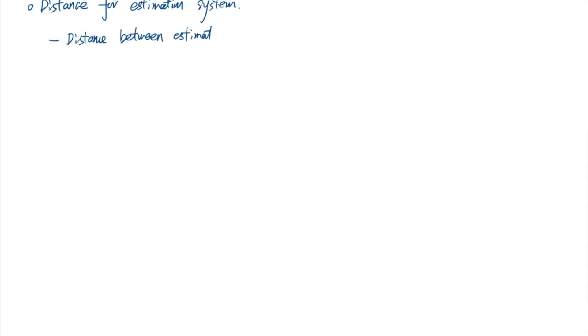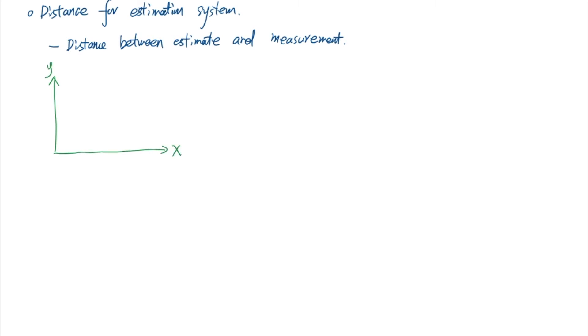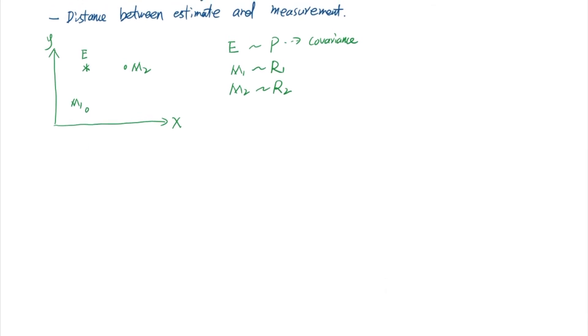Let's look at an example for the distance between estimates and measurements. Consider a 2D space x and y. We have one estimate at point E and two measurements at points M1 and M2. We know that point E is falling in normal distribution with covariance equal to p. We also know M1 is falling in normal distribution with covariance equal to r1, and M2 is falling in normal distribution with covariance equal to r2. One question we want to answer is which measurement is closer to the estimate. There are two ways of thinking this, but there is really one way that is correct.